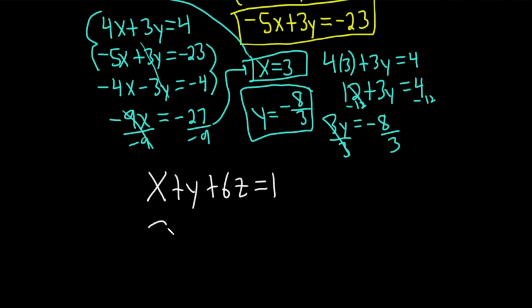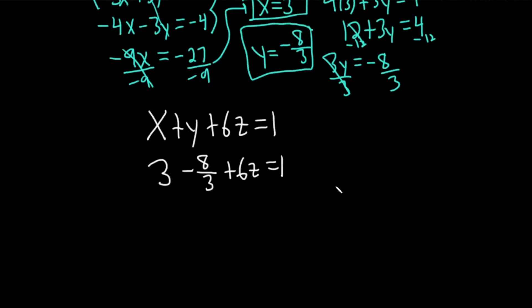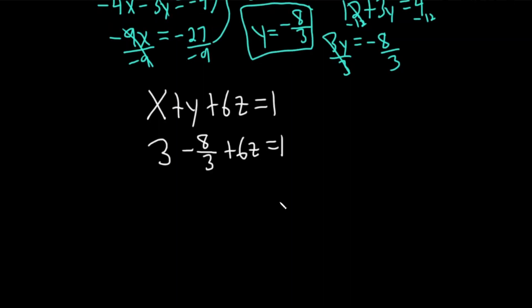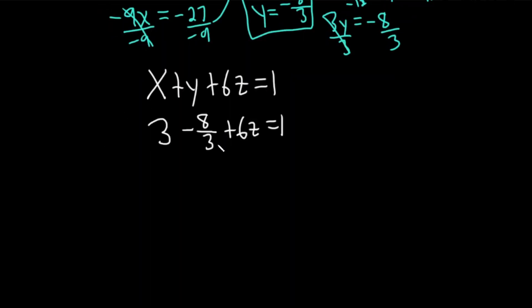So we have 3, because that's x, and then y is minus 8 thirds, plus 6z and that's equal to 1. Lots of fractions here. You can eliminate the fractions by multiplying everything by 3. Let's do that so we don't have to worry about adding fractions and stuff like that.